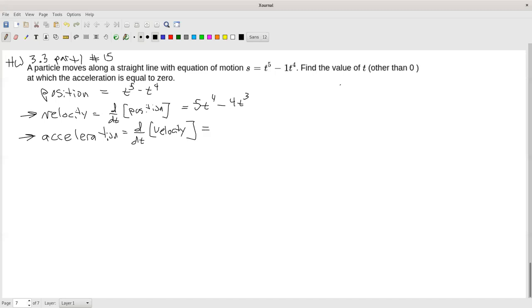So t to the 4th, that derivative is 4t cubed times 5, 4 times 5 is 20t cubed minus derivative of t cubed is 3t squared times 4 is going to give me 3 times 4 or 12 t squared. So I now have acceleration.